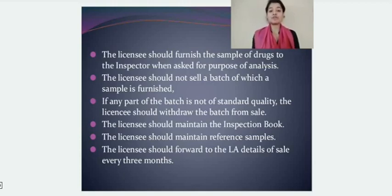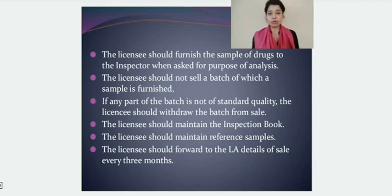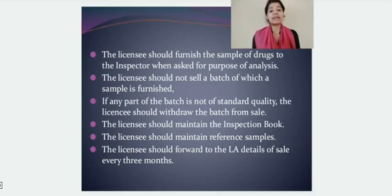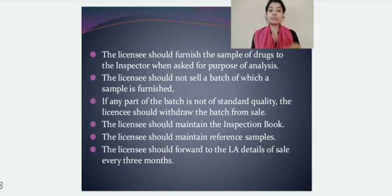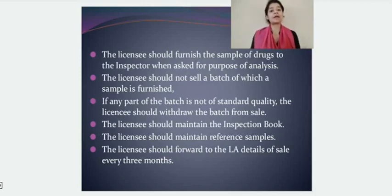If any part of a batch is not of standard quality — either substandard or adulterated — the licensee should withdraw the entire batch and recall it from the market as early as possible. The licensee should maintain a proper inspection book where the inspector can record all findings. The licensee should also maintain proper reference samples in quantities twice those required for analysis. If samples have an expiry date, they must be kept for three months past expiry; if they do not bear an expiry date, samples must be kept for three years from the date of manufacturing.